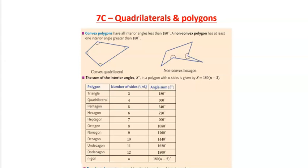Convex polygons have all interior angles less than 180 degrees. A non-convex polygon has at least one interior angle greater than 180 degrees.